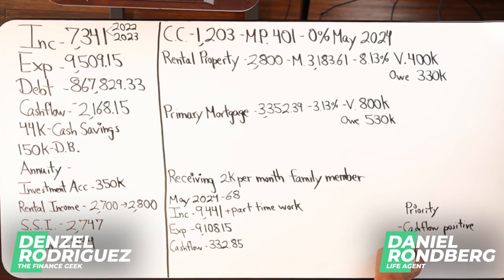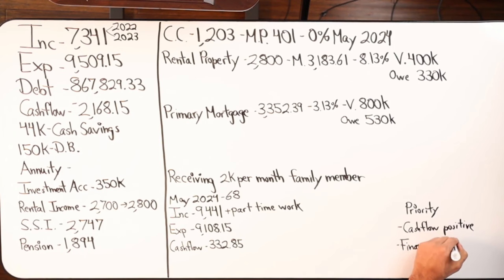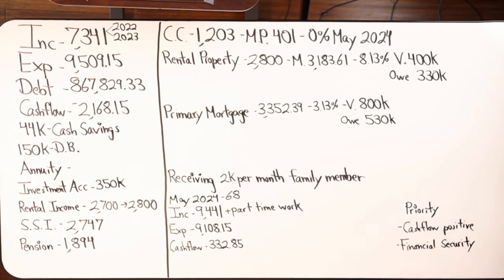Where's your shortfall and how can we cover that with another source of lifetime income like social security and the pension? When pension and social security have a shortfall between what's coming in on a monthly basis and what you need to cover all your expenses, that's a great place for an annuity. That's what an annuity does — it's basically like another pension-like income that you can put in place to secure your retirement.